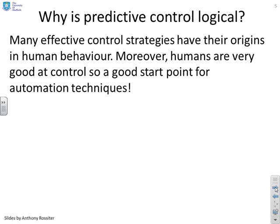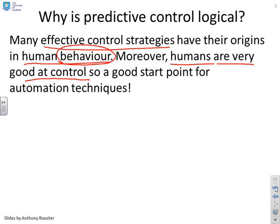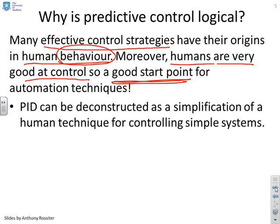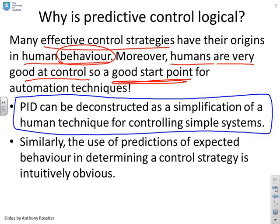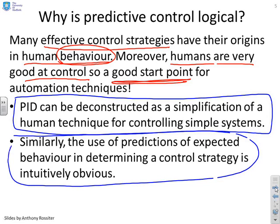Why is predictive control logical? Many effective control strategies have their origins in human behaviour. Humans are actually quite good at control, at least to some level. So if we can understand how humans behave, we've got a good starting point for designing an automation technique. If you look at something like PID and deconstruct what's going on inside a PID compensator, you'll find it's a simplification of a human technique for controlling simple systems. Similarly, you can show that humans make use of predictions for common control strategies. If you can understand how humans use predictions to control the world around them, you're most of the way to automating that and getting a computer to do the same thing.